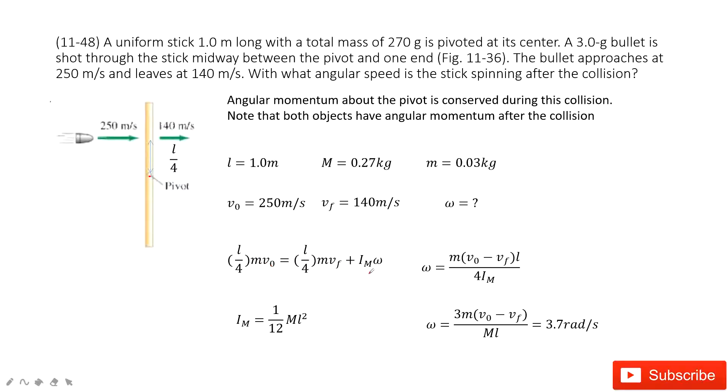And then the final angular momentum should include two parts. First part from the bullet: the bullet still will have r·p. The r is still L divided by 4. The p is M times the final velocity, plus the Iω. I is the moment of inertia times omega.